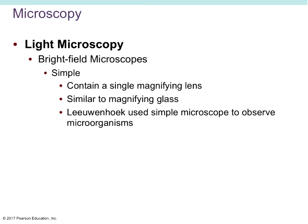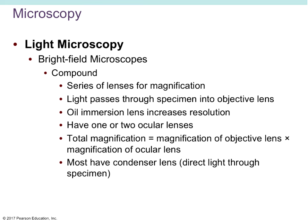Bright-field microscopes can be simple, meaning they contain only one lens — very similar to a magnifying glass. Leeuwenhoek used a simple microscope to observe many different microorganisms, and his microscope would be considered a simple bright-field microscope. The more advanced version is a compound microscope, meaning more than one set of lenses. We have our ocular lenses — most are 10x magnification.